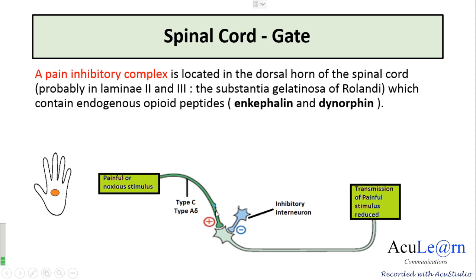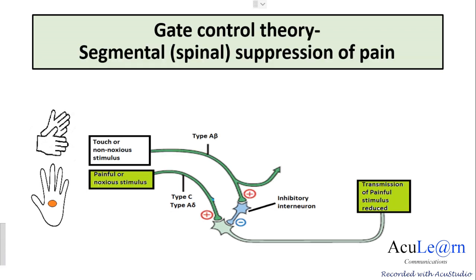The gate for pain transmission is closed when the inhibitory interneuron is activated. So how we enhance this inhibitory interneuron activity is the essence of the gate control theory.